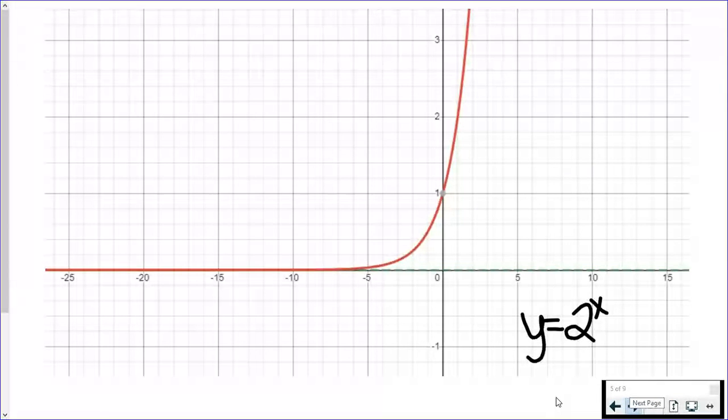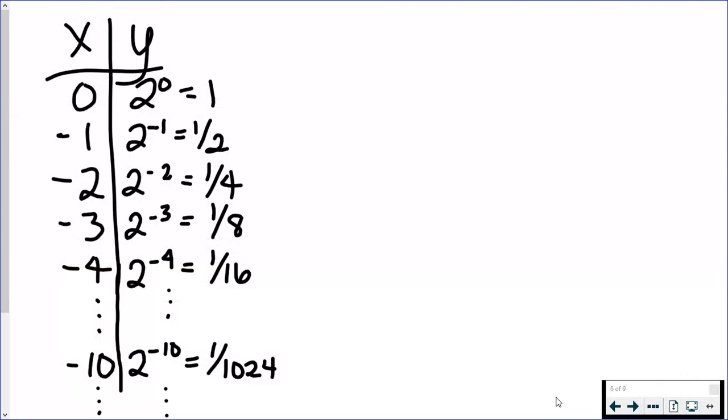If we were to plug in different x values, let's say we plug in x equals 0, we're doing 2 to the 0, which equals 1. If I plug in negative 1, I'm doing 2 to the negative 1, a negative exponent actually flips your base, so it becomes 1 over 2 to the 1, or 1 half.